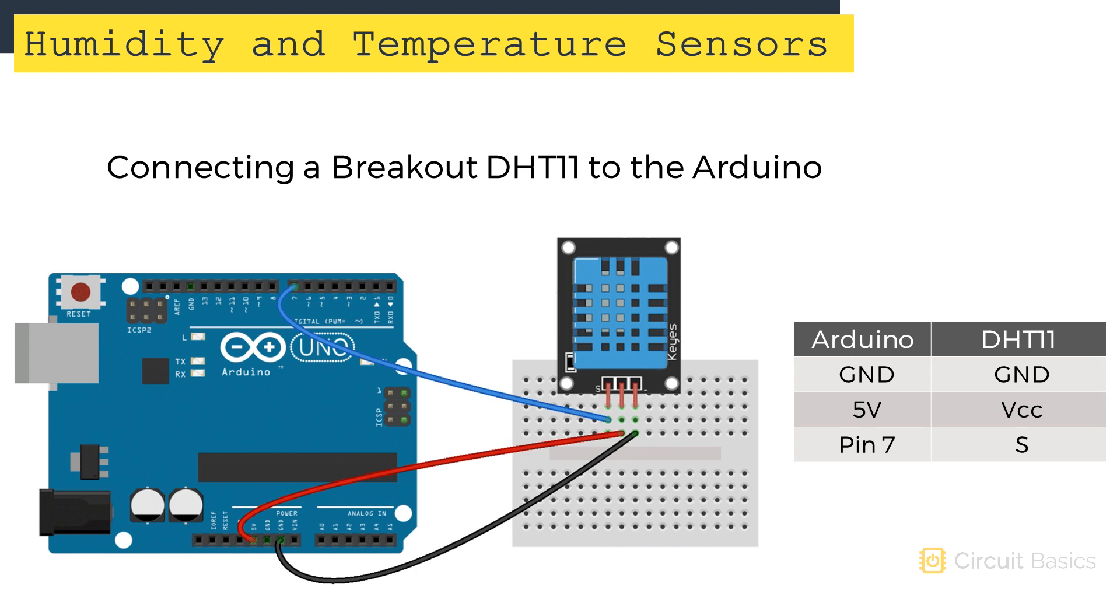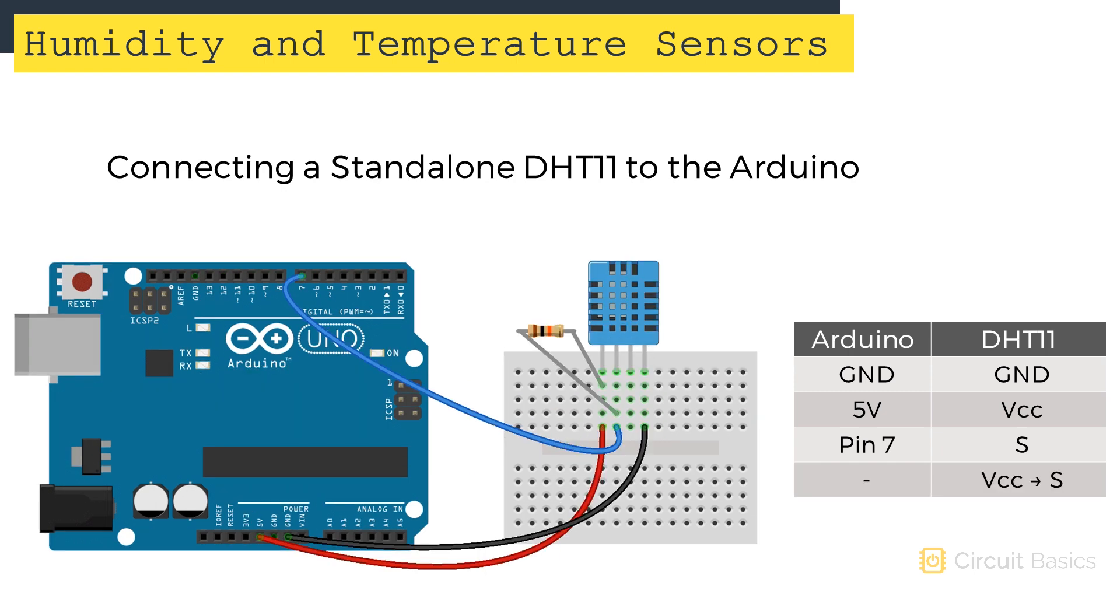To connect the breakout version to the Arduino, connect the leftmost pin to digital pin 7 of the Arduino, the middle pin to VCC, and the rightmost pin to ground. To connect the standalone DHT11, you need to place a 10 kilo ohm pull-up resistor between the VCC pin and the signal pin. Then connect the leftmost pin to VCC, the second pin to digital pin 7 on the Arduino, and the rightmost pin to ground. The third pin isn't used.